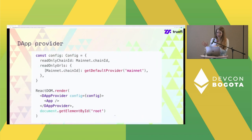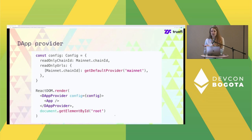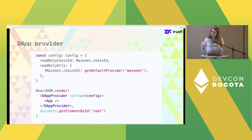You need to remember one important thing: you must wrap your application with the DAppProvider that useDApp provides. It needs configuration — for example, you pass readOnlyChainId (the chains you want to support in read-only mode) and readOnlyUrls, such as your own Infura or Alchemy API provider URL. You pass this config to the DAppProvider, and only then inside the app can you use any hook from useDApp.